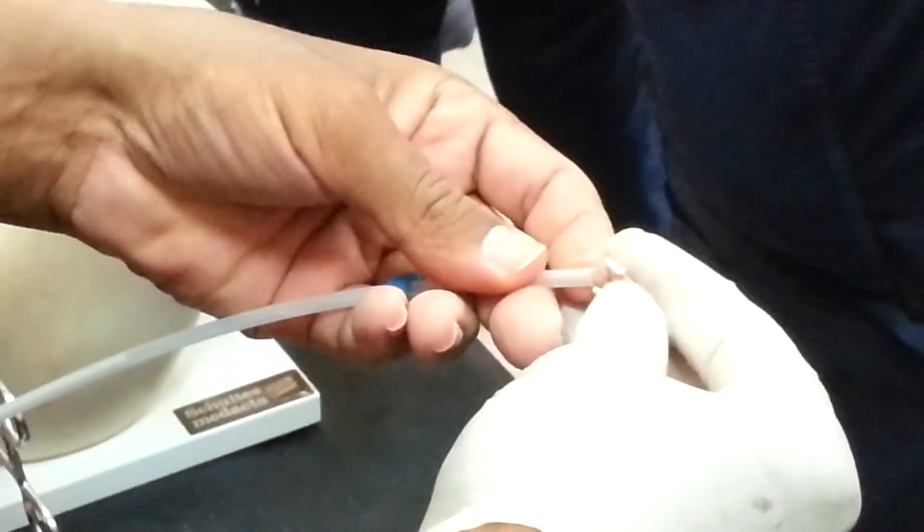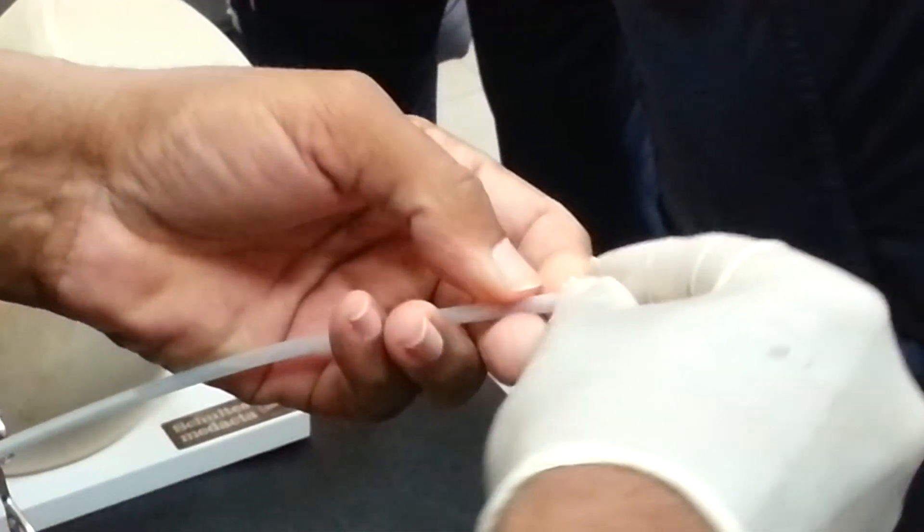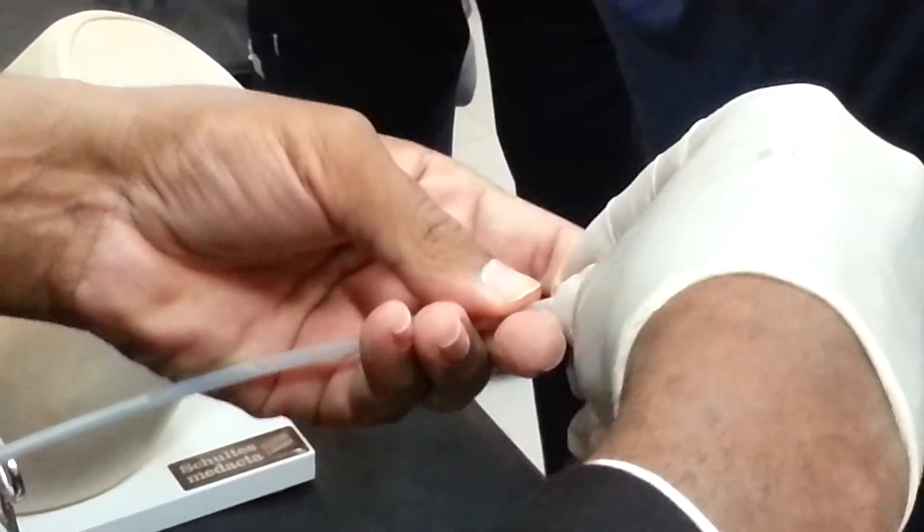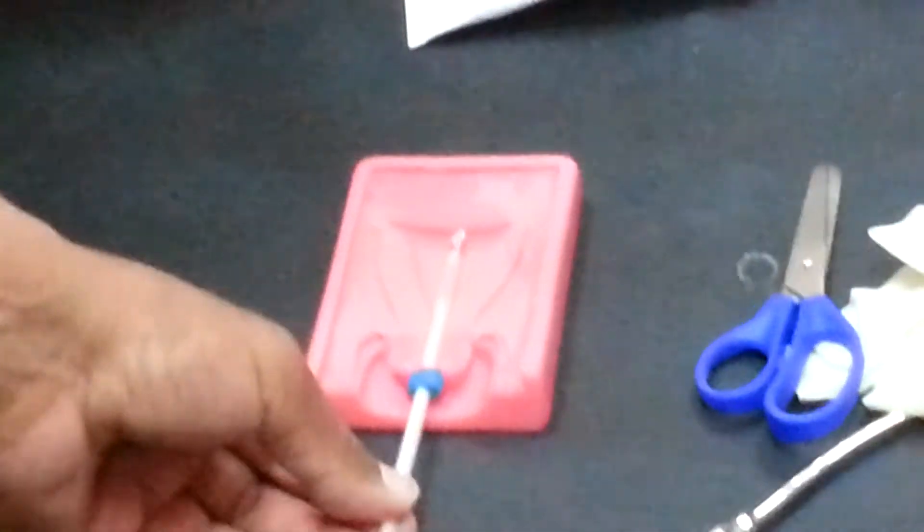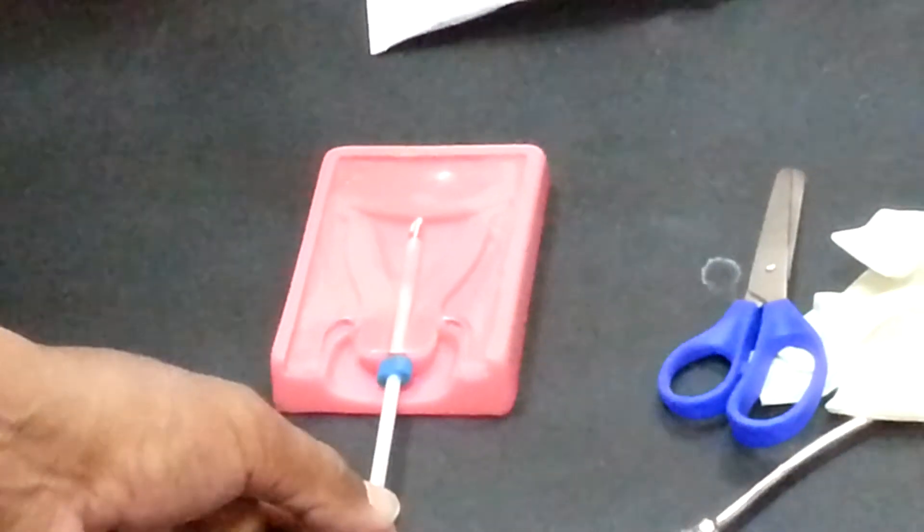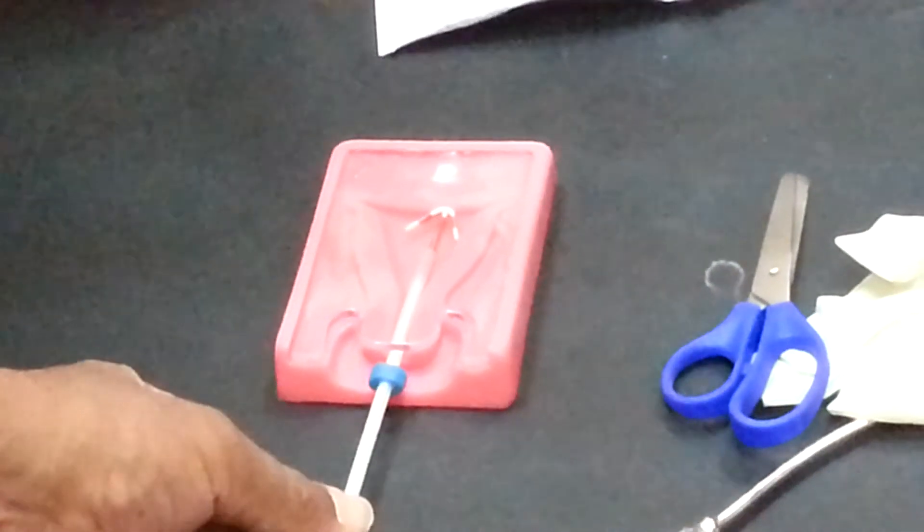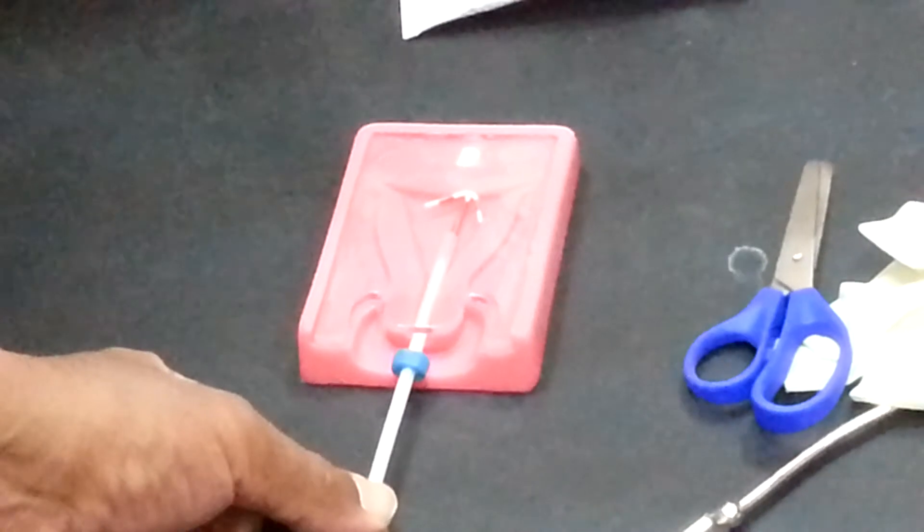Fold the tubing and insert it inside, like this. Come and put it inside and you introduce it up to this level. Then you stabilize this and move this, like this.